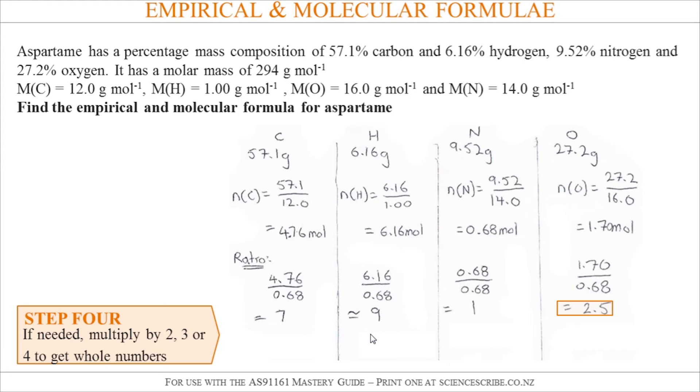You must have a whole number before you start writing your empirical formula. So to get rid of it you either multiply it by 2 or 3 or 4 to try and make a whole number. In this case if I multiply everything by 2 I can get rid of the 2.5. Remember you can't just multiply one number, you have to multiply all of them.